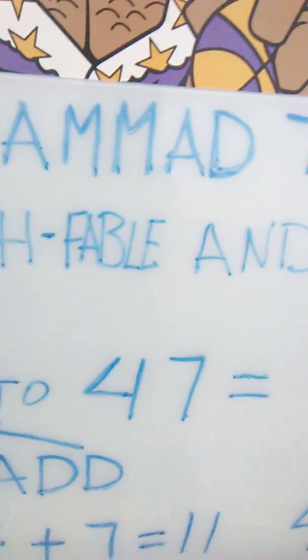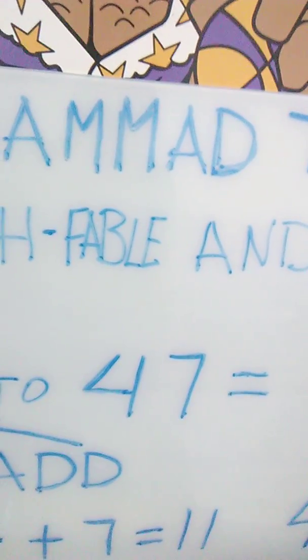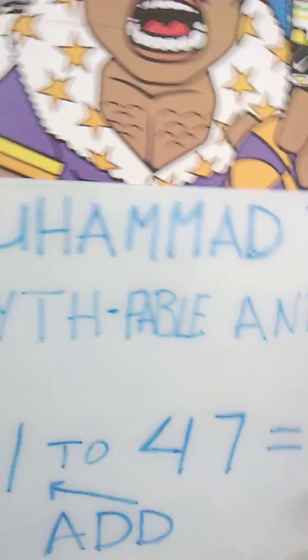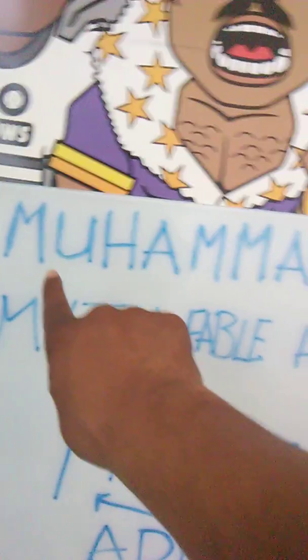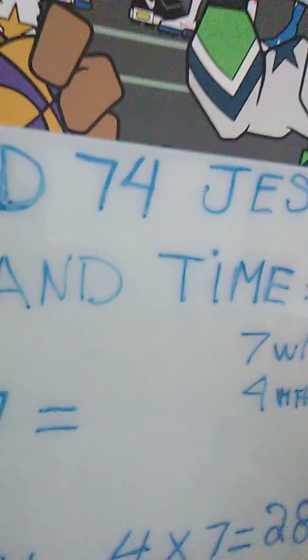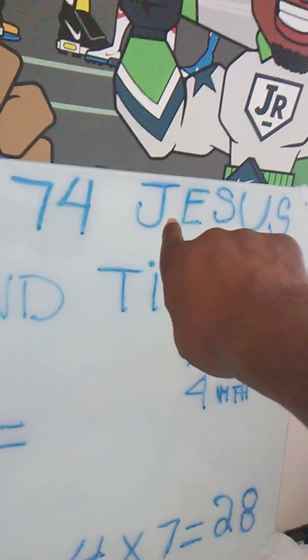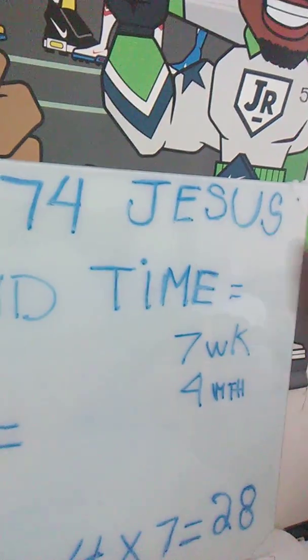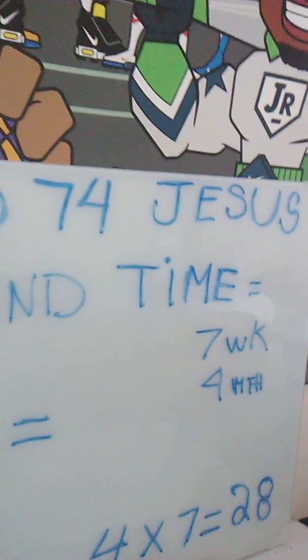Two of the myths that are wrapped around time are Christianity and Islam. The central figure or character of Islam is Muhammad - one word, eight letters. The central figure around Christianity is Jesus.